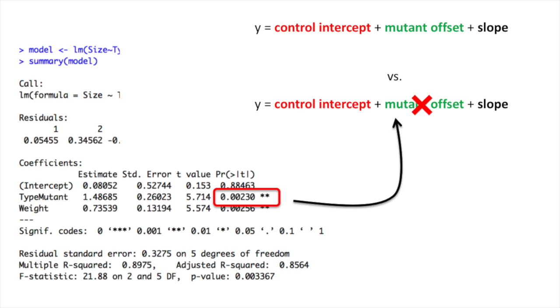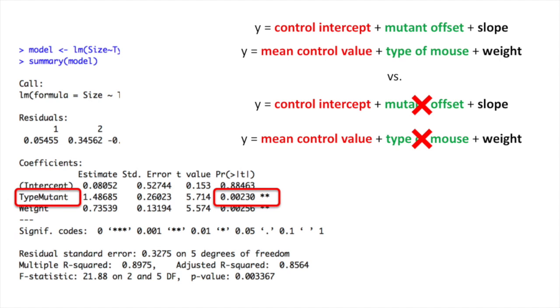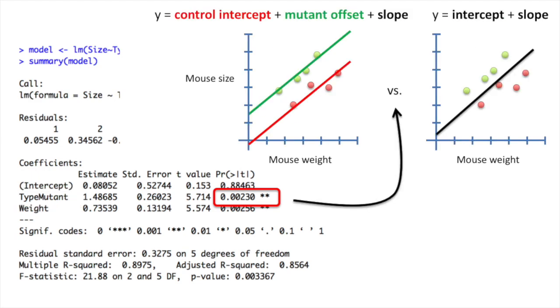This p-value for the type of mouse tells us how much better the fancy equation fits the data than if we had removed the type of mouse information from the equation. This amounts to comparing the fit of the fancy equation to just a simple linear regression. So calling the linear model function actually does a bunch of different tests for us. It's important to know which test we're actually interested in. The next example shows that sometimes we're not actually interested in the p-value in the lower right hand corner. So now let's move on to the second example.